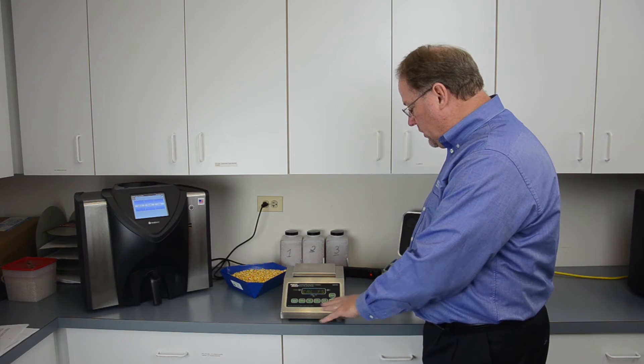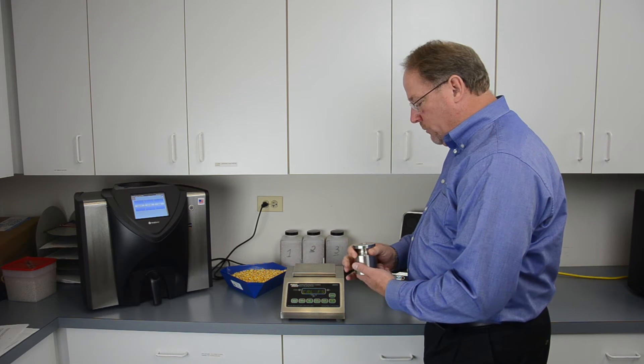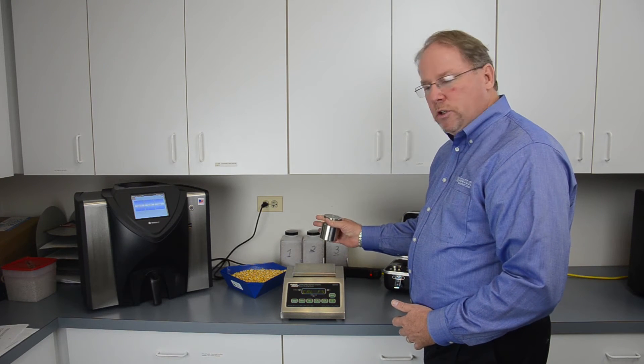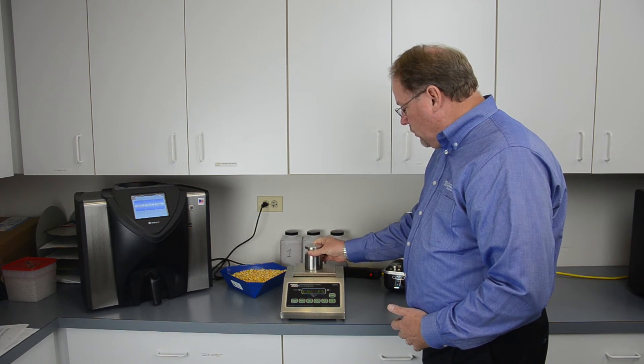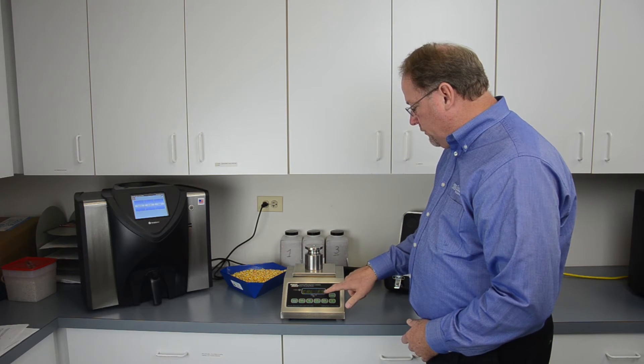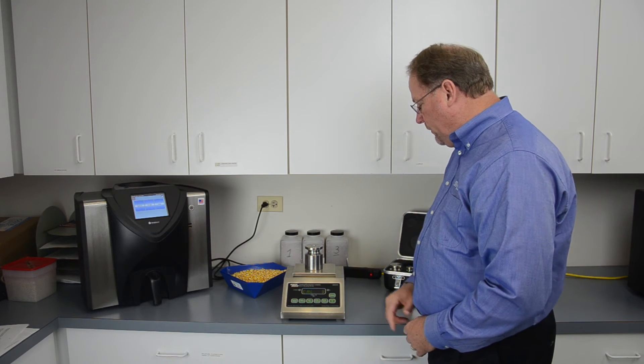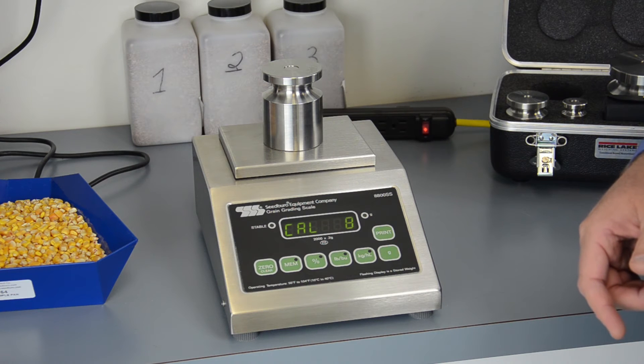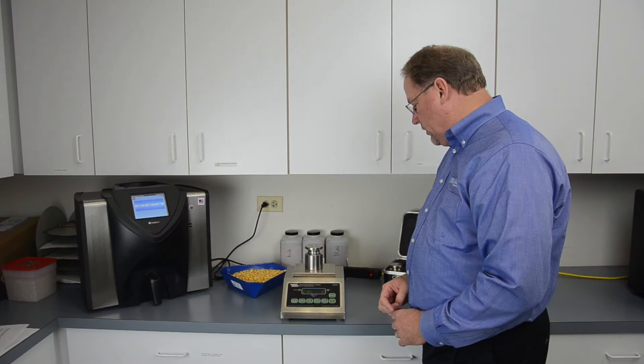The full scale calibration on this instrument is 2,000 grams. You'll want to use a precision weight of 2,000 grams at full scale. Push zero again. It once again counts down from eight to zero twice to record that weight into its calibration sequence.